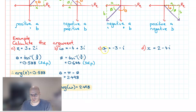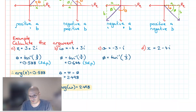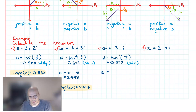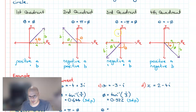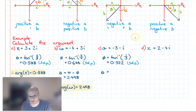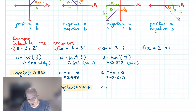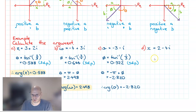Next, Sigma equals negative 3 minus i. Phi is equal to the inverse tangent of 1 over 3, which gives 0.322. We have a negative real and negative imaginary component, so we're in the third quadrant. Our identity is theta equals negative pi plus phi, giving the result negative 2.820. Therefore the argument for Sigma is negative 2.820.